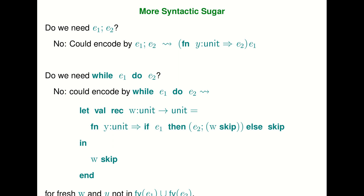We implemented while e1 do e2 as: evaluate e1, and if it's true, evaluate e2 then rerun the recursive loop. To encode while e1 do e2, we define a recursive function of type unit → unit, say w: if the test condition is true, evaluate e2 and then recursively call the while loop; otherwise return unit. Then once we have this recursive definition, we kick it off with a skip. We introduce w and y as variables not occurring in e1 and e2.